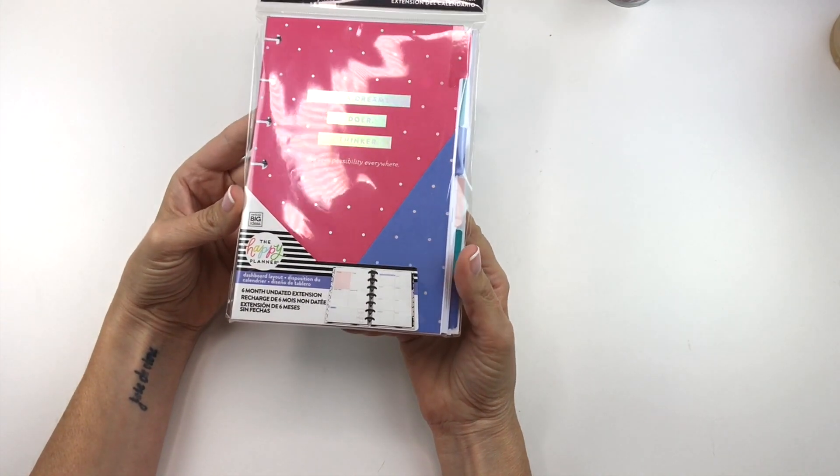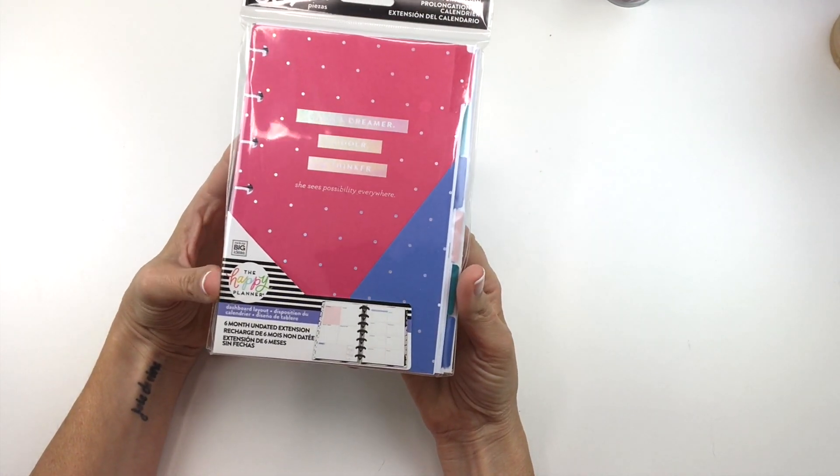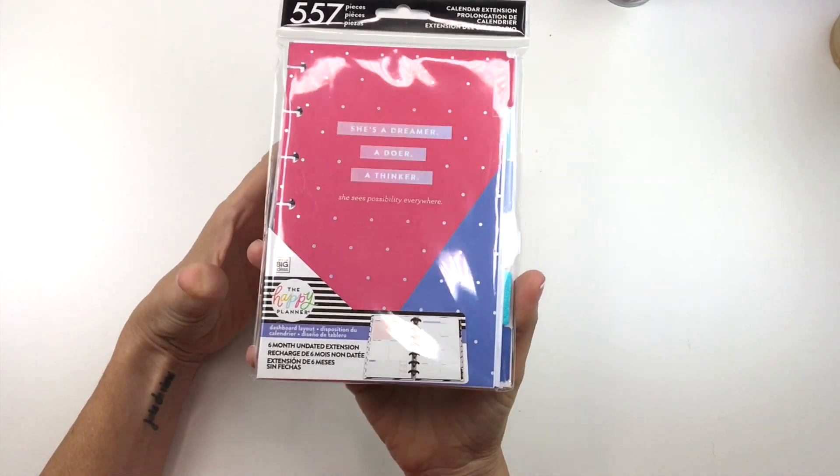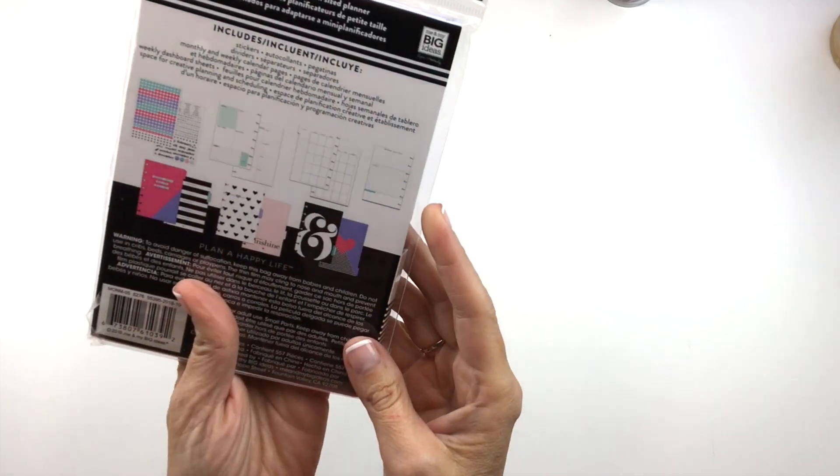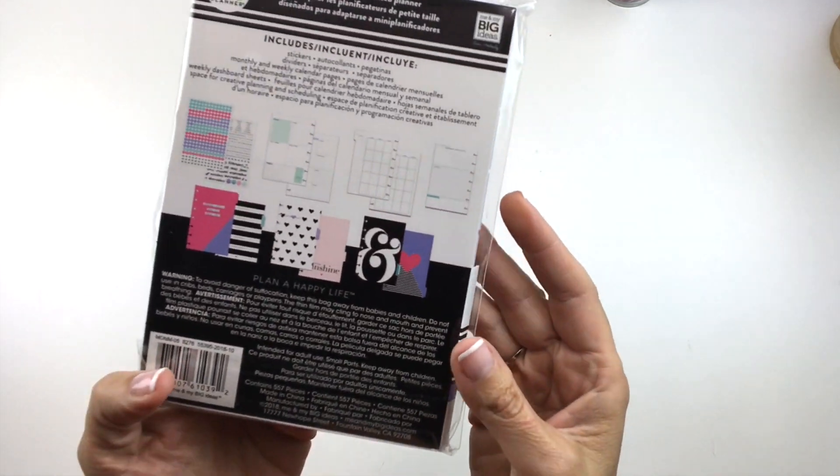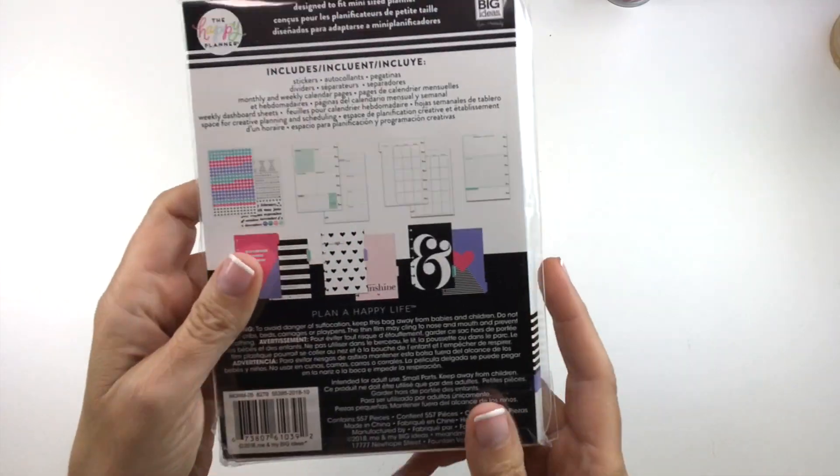I'm also giving away a six month undated extension pack. This is the dashboard layout. This is for the mini. I'm giving this one away because I do have another one. I've been wanting to try this but I decided that I would give this one away and keep the other one.